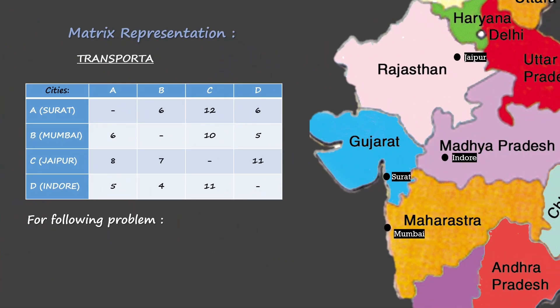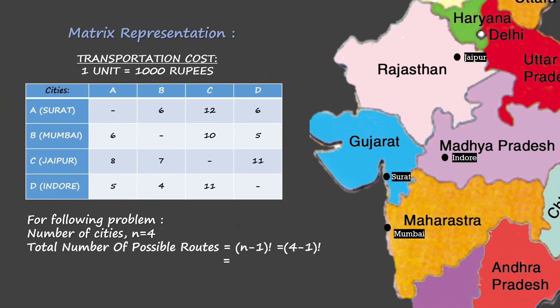This is the matrix representation corresponding to our problem. The costs incurred for traveling between the two cities are given, where one unit is considered to be equal to one thousand rupees. You can see the elements of the matrix, which are the transportation costs associated with every edge between the two cities. For example, the transportation cost from city A, i.e. Surat, to city B, i.e. Mumbai, is 6 units, or 6,000 rupees.